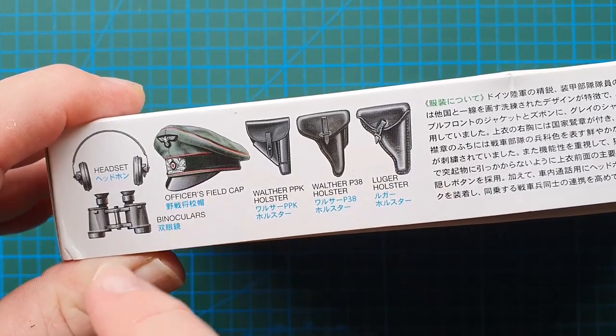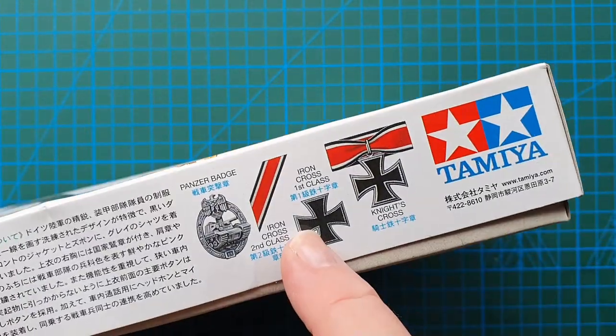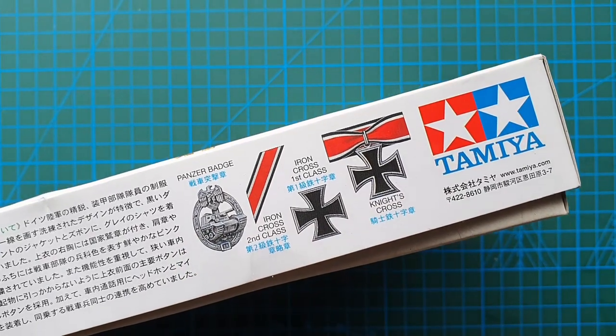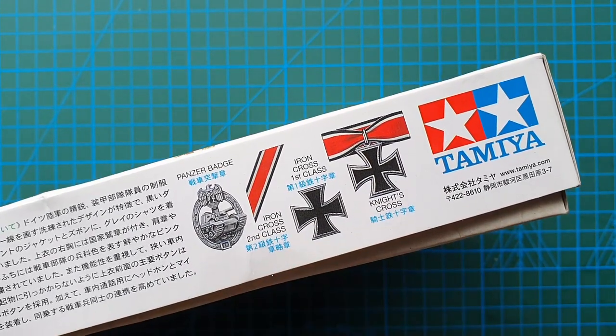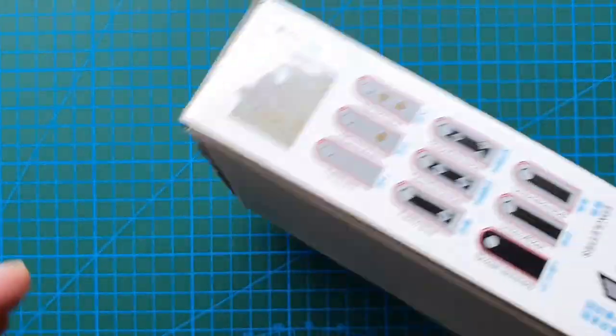On this side you've got just the accessories that you'll get with this kit: pistols, cap, binoculars, headsets. This is the standard awards that you'll see on your German soldiers: Knight's Cross, Iron Cross, Panzer badge.